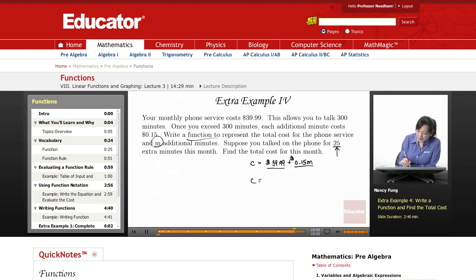c equals $39.99 plus 0.15, 15 cents for each of the 25 minutes.